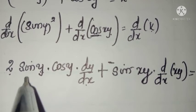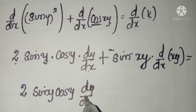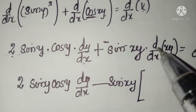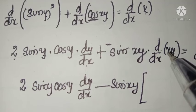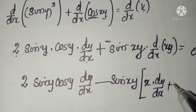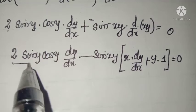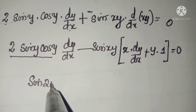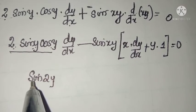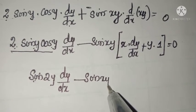On simplification: 2 sin y cos y dy by dx minus sin(xy) into derivative of xy. Since xy is x into y, we apply the product rule. Also recall: 2 sin y cos y equals sin 2y. So we get sin 2y dy by dx minus sin(xy) into x dy by dx minus sin(xy) into y equals 0.